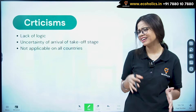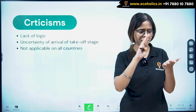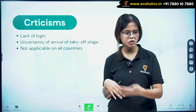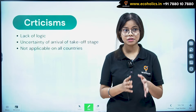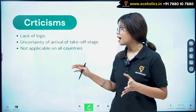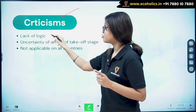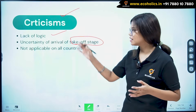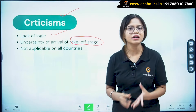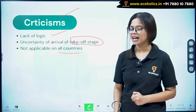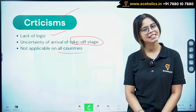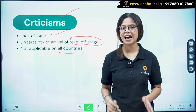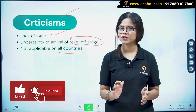While the theory seems logical — transforming from agriculture to industry, then shifting preferences from durable to luxury goods — it does not apply to every country. There are criticisms: lack of logic, uncertainty of arrival to the Take Off stage, and it is not applicable to all countries. I hope Rostow's Stages of Economic Growth is clear. Please like, share, comment, and subscribe to our channel, Ecoholics. Thank you.